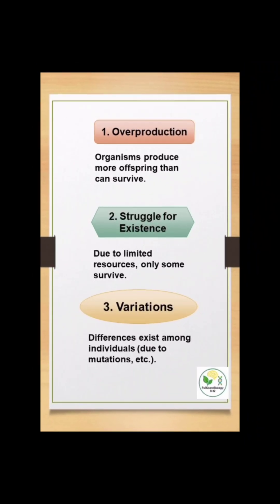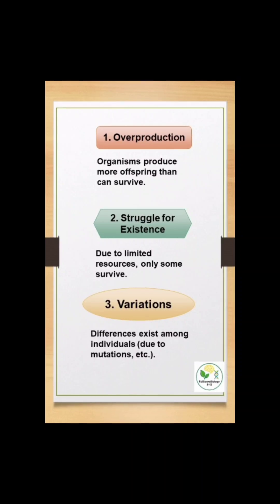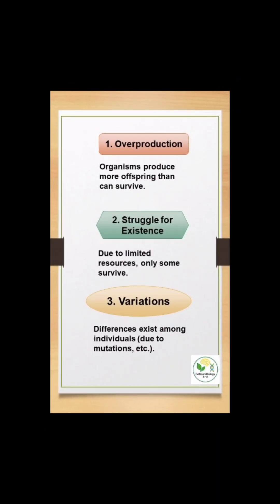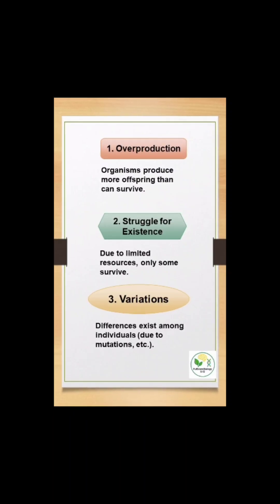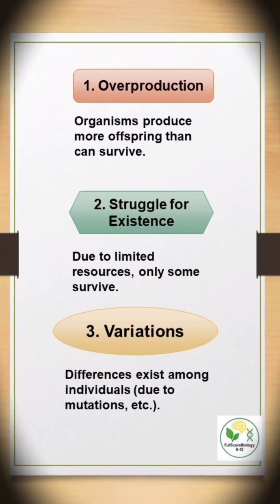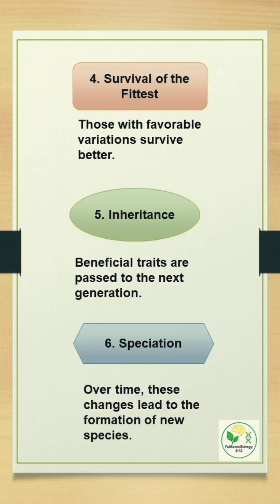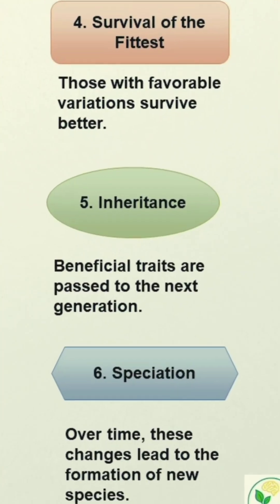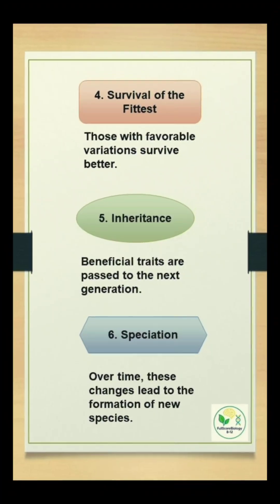During this struggle, only some members can survive. These organisms have some differences from the other members. These differences can be caused due to mutations. If these variations are favorable for the organism, they will survive better, and these beneficial characters can be passed on to the next generation.